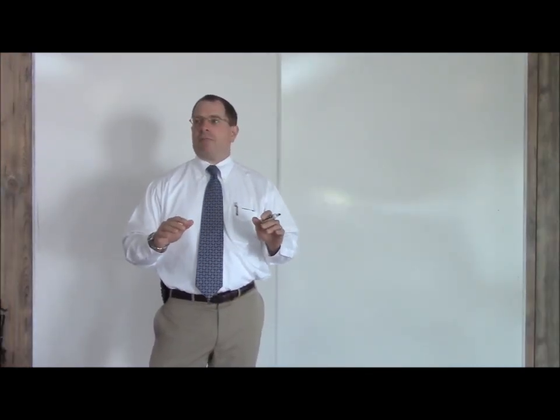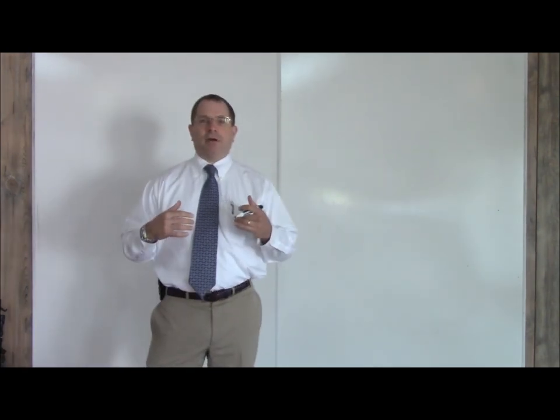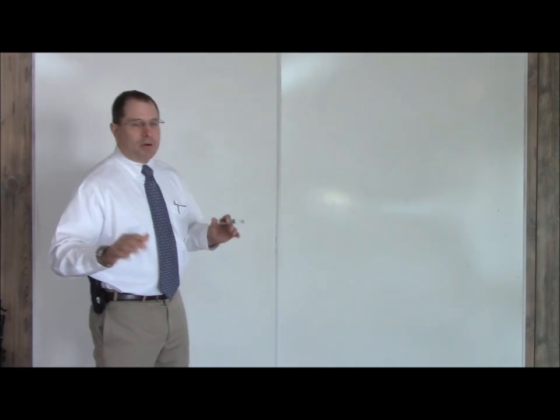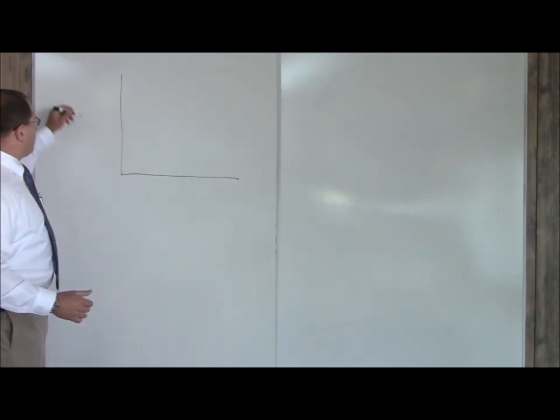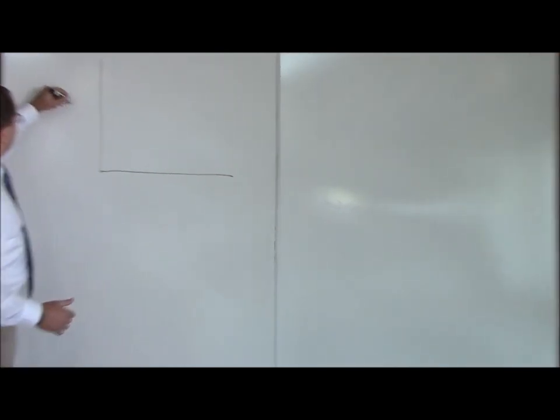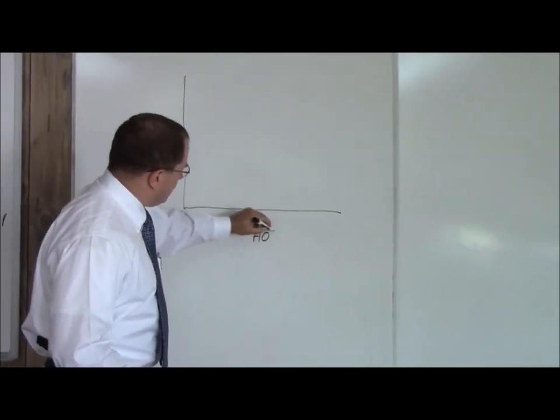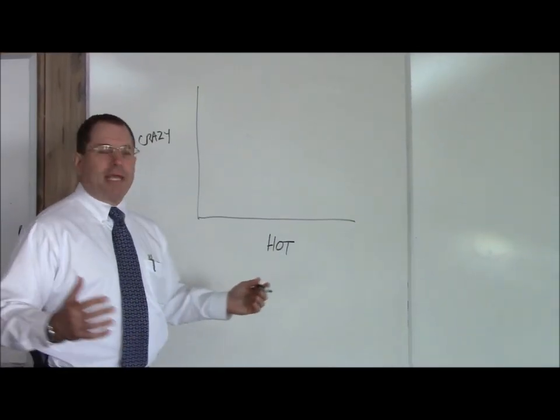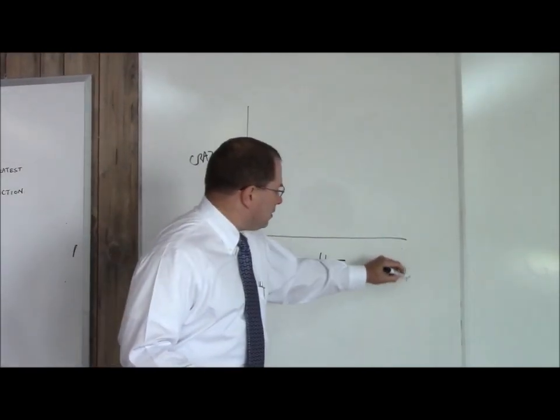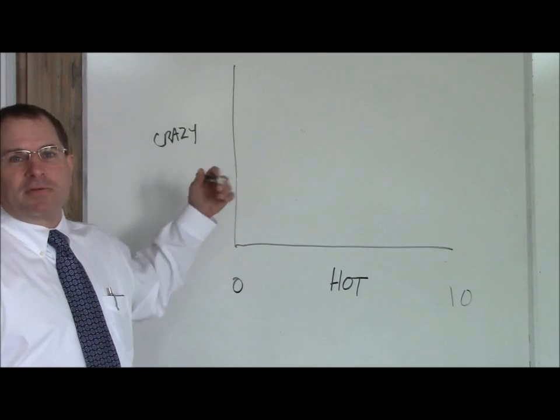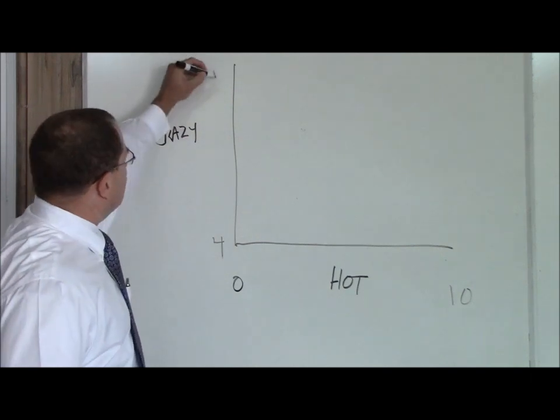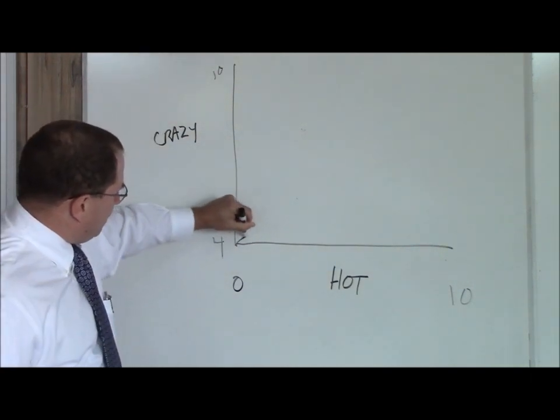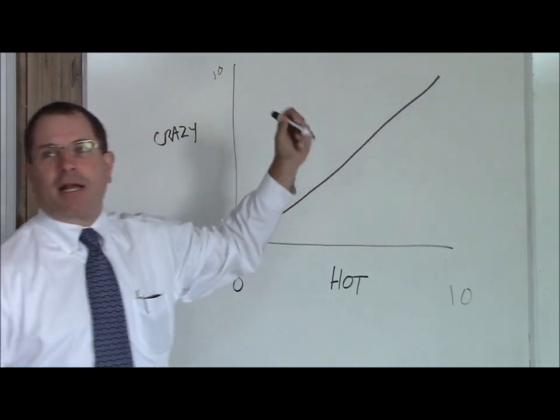So this is the universal Hot Crazy Matrix. It's everything a young man needs to know about women. I've developed this on my own over 46 years of living on the earth. You have your crazy axis and your hot axis. Hot is as usual measured from 0 to 10. Crazy is measured from 4 to 10 because of course there's no such thing as a woman who's not at least a 4 crazy. This is your hot crazy line right here. Very important that you keep in mind where the hot crazy line is.